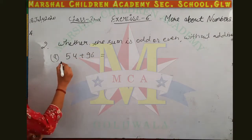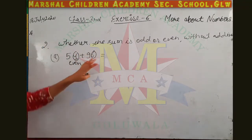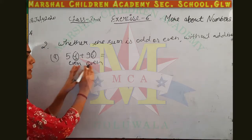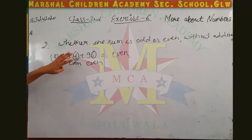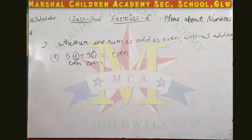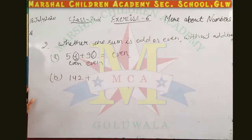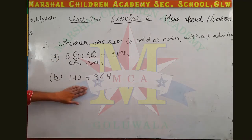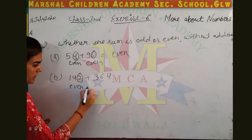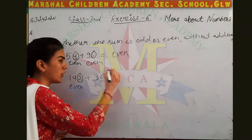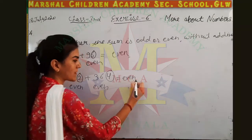We use the three basic concepts. For 54 plus 96: 54 ends with four — even number. 96 ends with six — even number. Even plus even gives even. For 142 plus 364: 142 ends with two — even. 364 ends with four — even. Adding two even numbers gives an even number, so the answer is even.